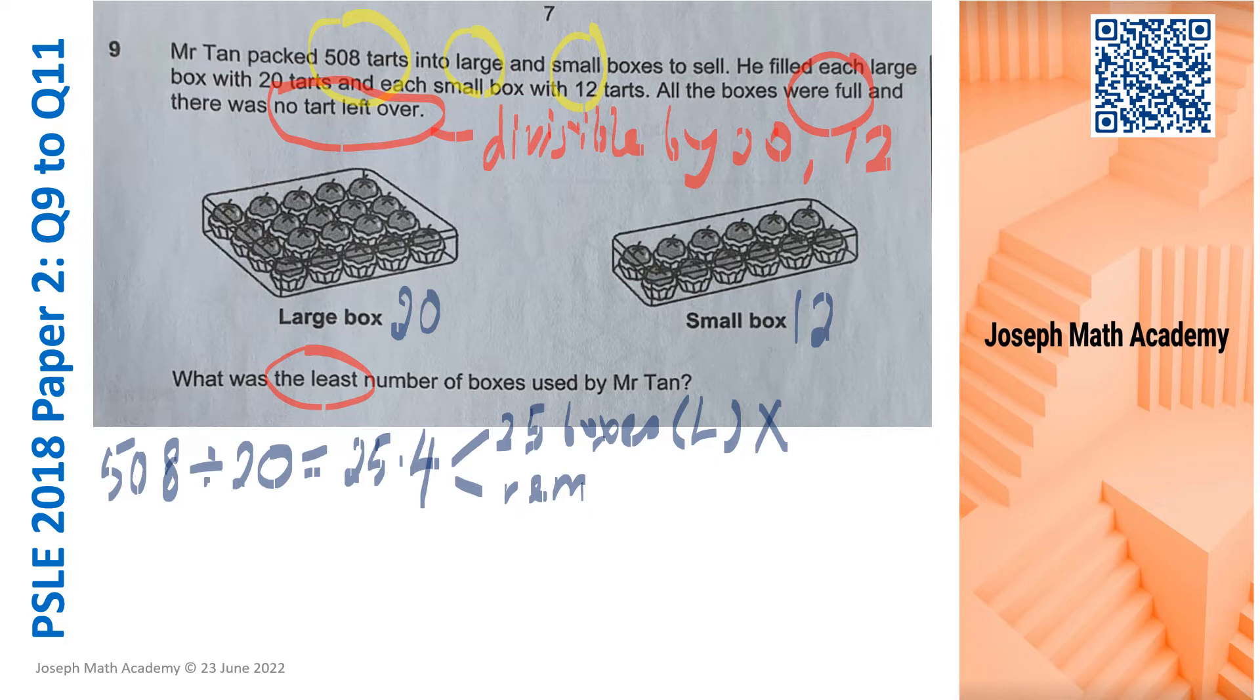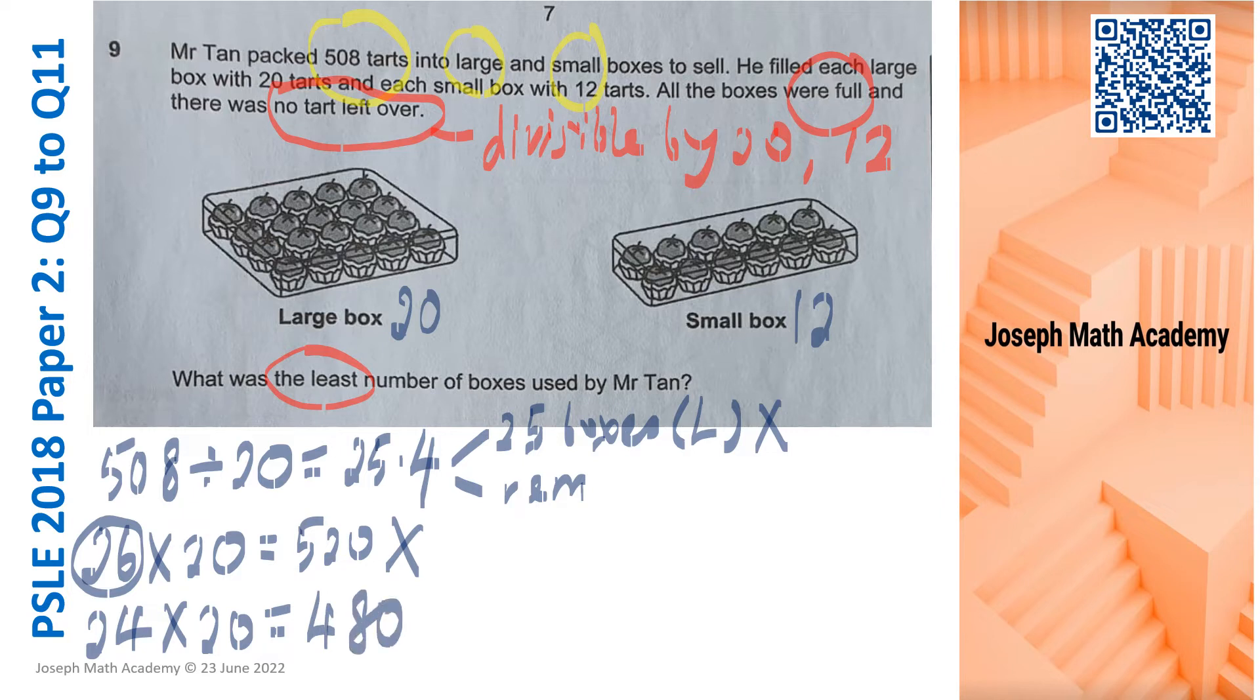So if there are 26 boxes of 20 tarts, 26 times 20 gives us 520. 520 already exceeds the 508. So 26 boxes of large one is ridiculous. So it's out. So we cannot have more than 25, so we have to go down to 24 boxes. If there are 24 boxes, 24 times 20 gives us 480. And these 480 tarts are in large boxes, meaning the remaining 28 tarts must be in small ones. But 28 is not divisible by 12. So out.